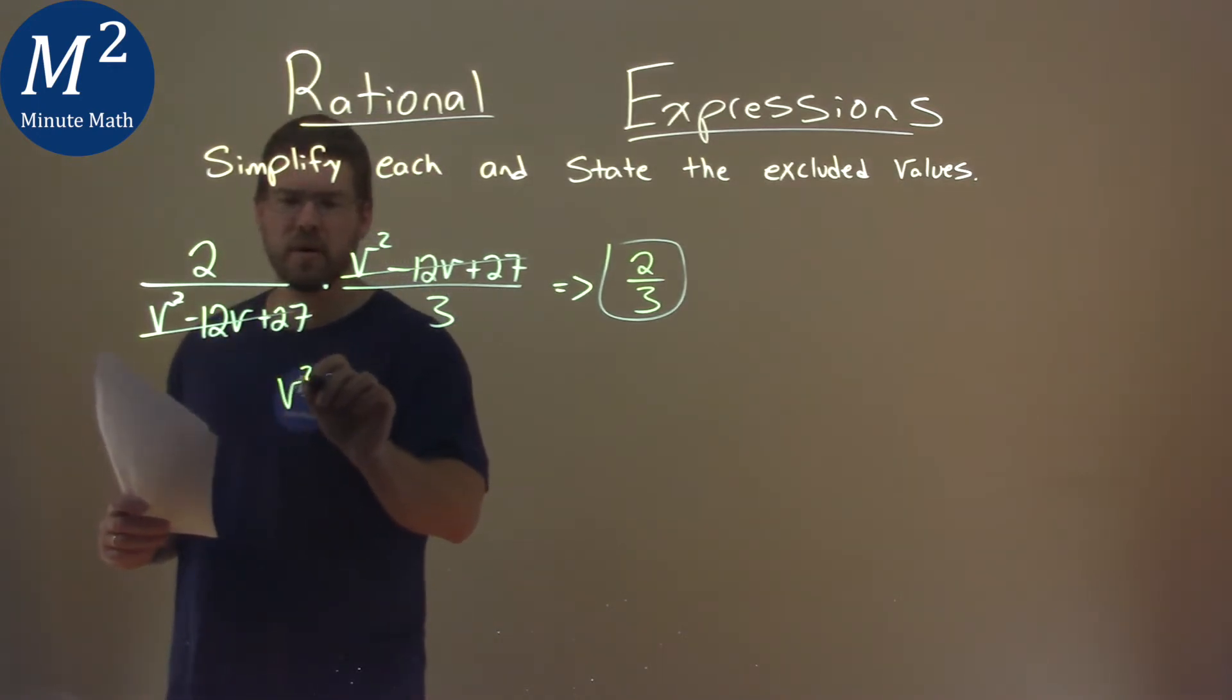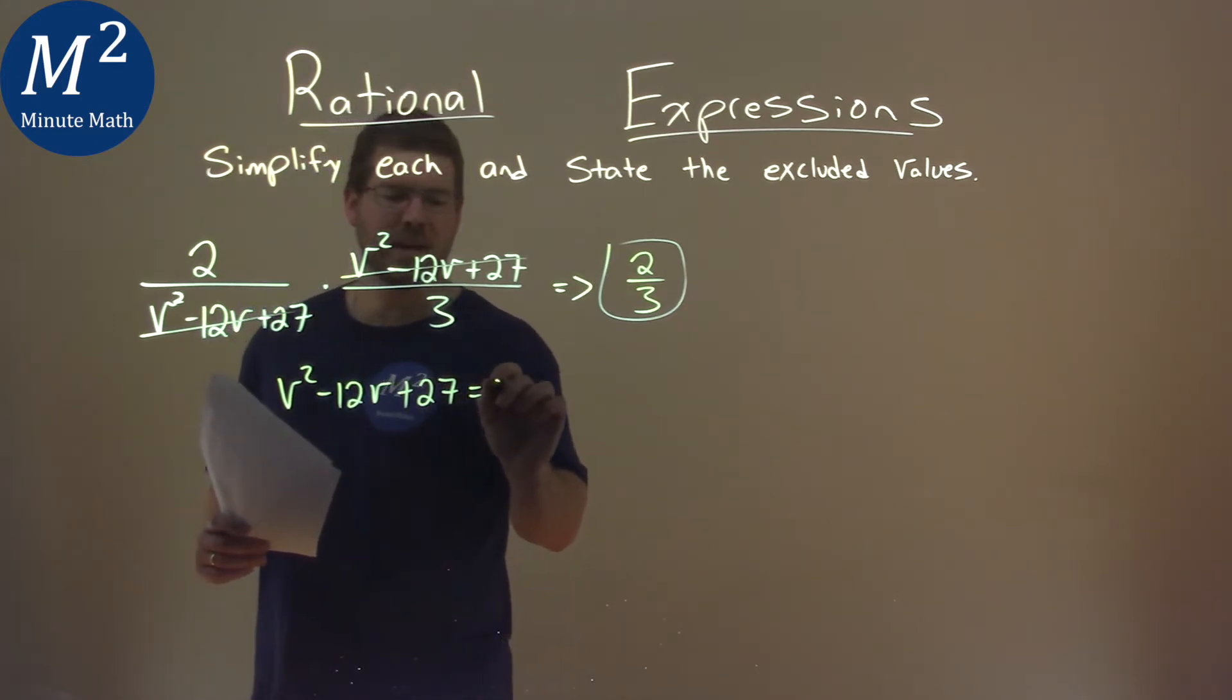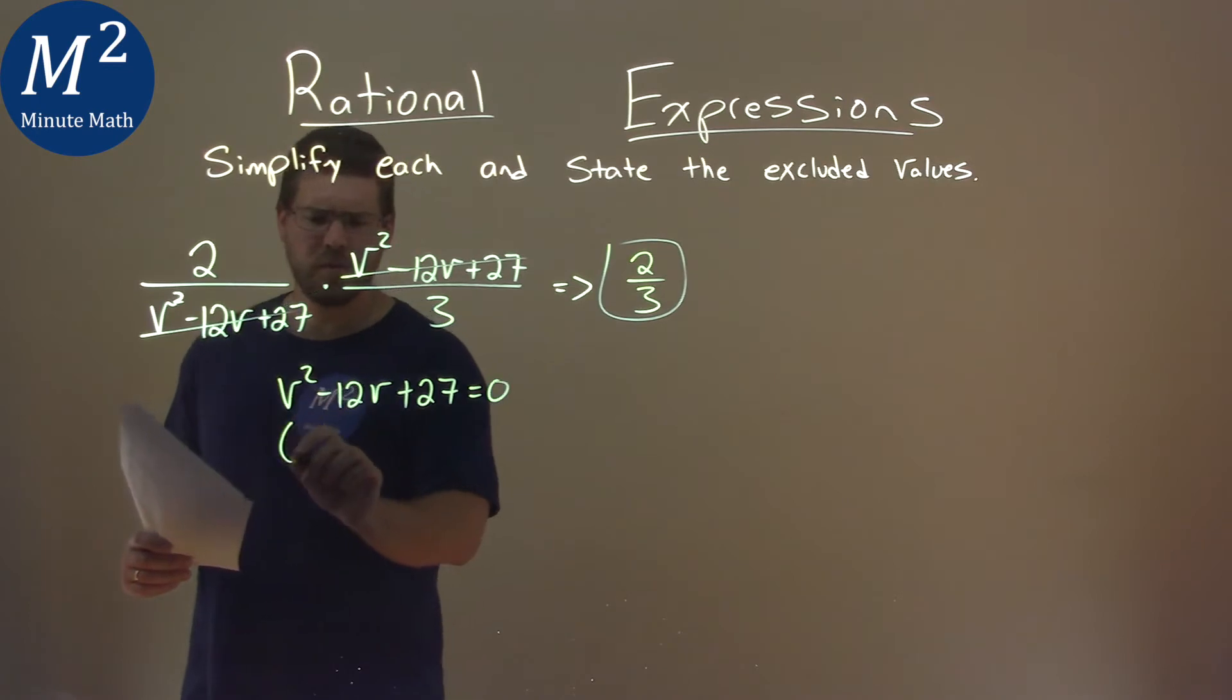But here we have v squared minus 12v plus 27, and we're going to set that equal to 0 and try to find the values where this occurs. We'll see if we can factor this.